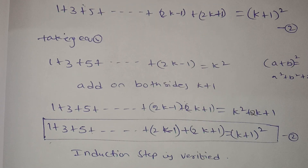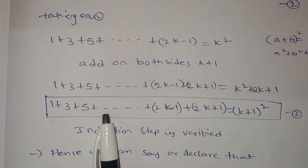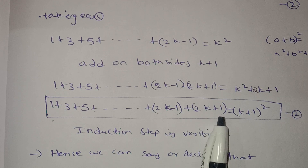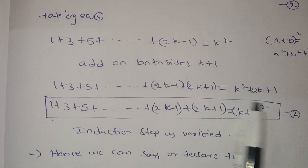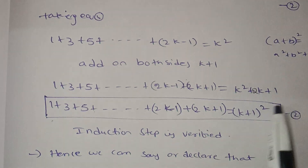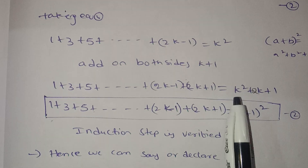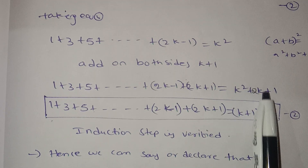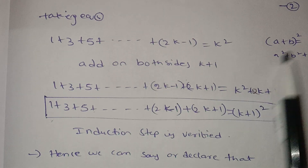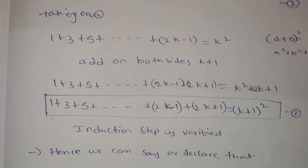Okay, add 2k plus 1. So 1 plus 3 plus 5 up to (2k minus 1) plus (2k plus 1) equals k² plus 2k plus 1. This uses the formula (a plus b) whole square. Here we have k², plus 1², plus 2 times 1 times k equals 2k. So the result is (k plus 1) whole square.